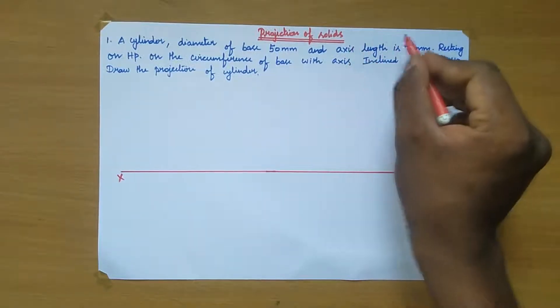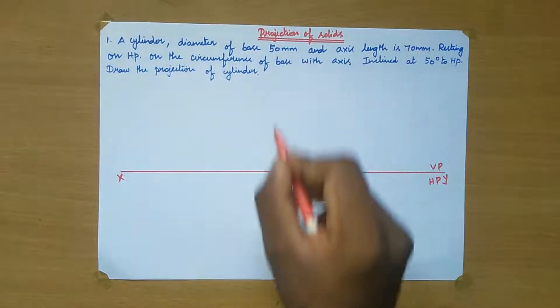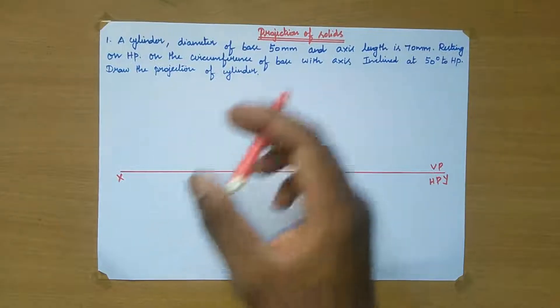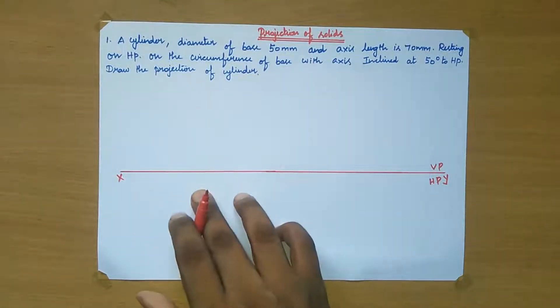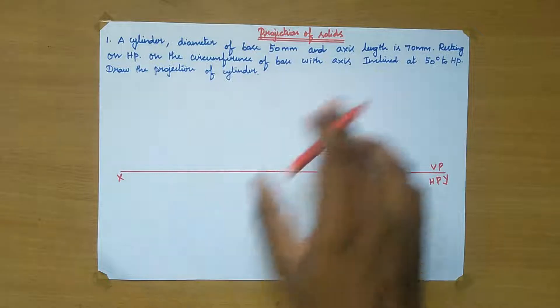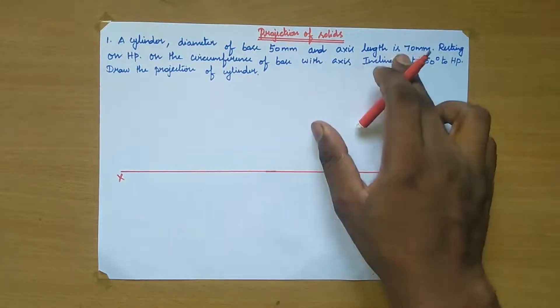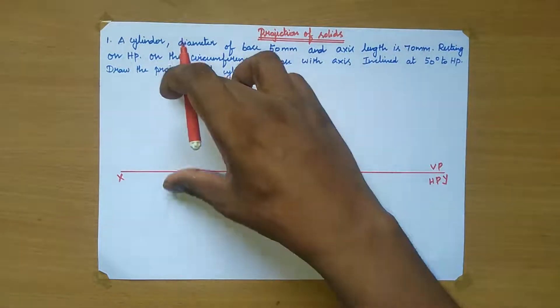In the axis line, it is a front view section. Obviously that circular image is on the top view section. The axis length on the front view section, where it has been fixed on HP.